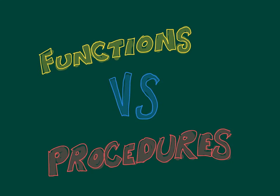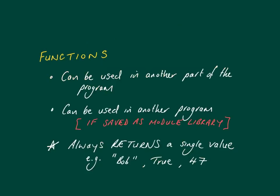In this video we are going to look at functions and procedures and compare how they operate. We're going to look at how you create one using pseudocode and then we'll turn it into some Visual Basic code. Firstly, functions can be used in another part of the program. It allows your code to be modular which will reduce the size of your program and make it more efficient. Functions can also be used in a completely different program, but only if you've saved it as a module library.